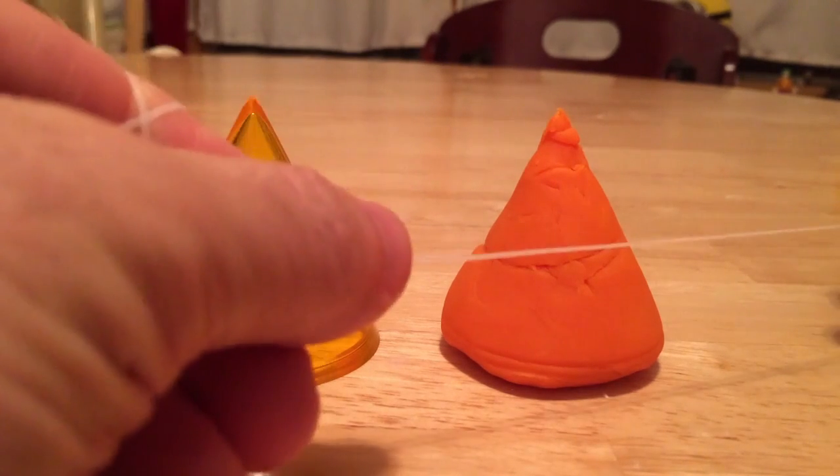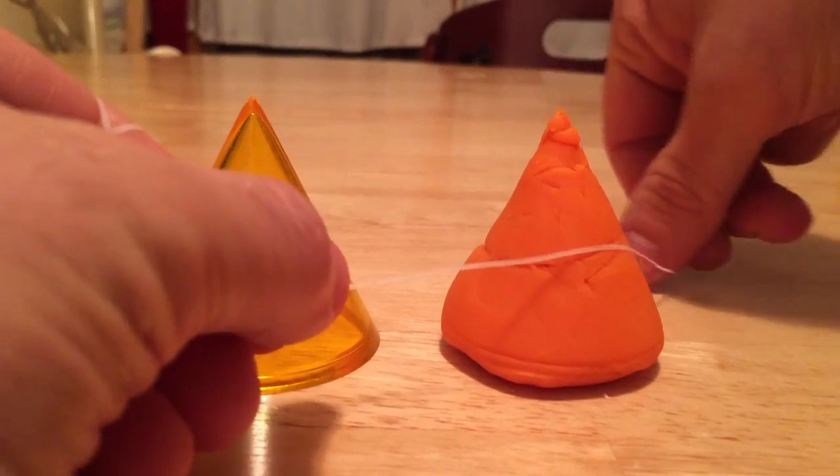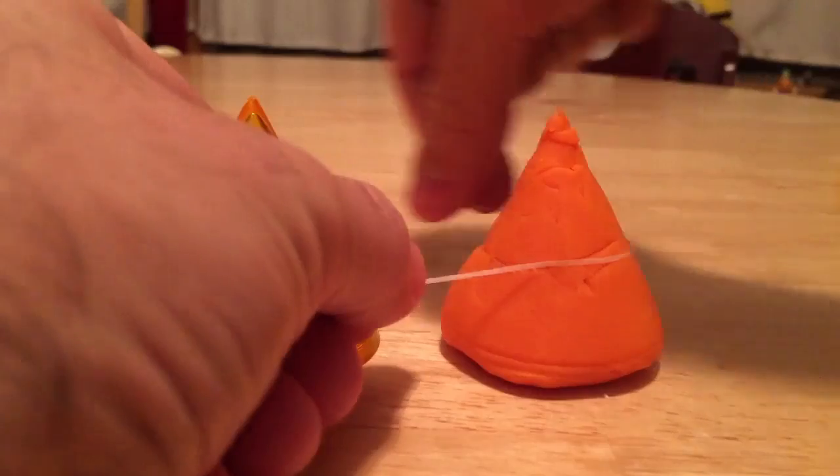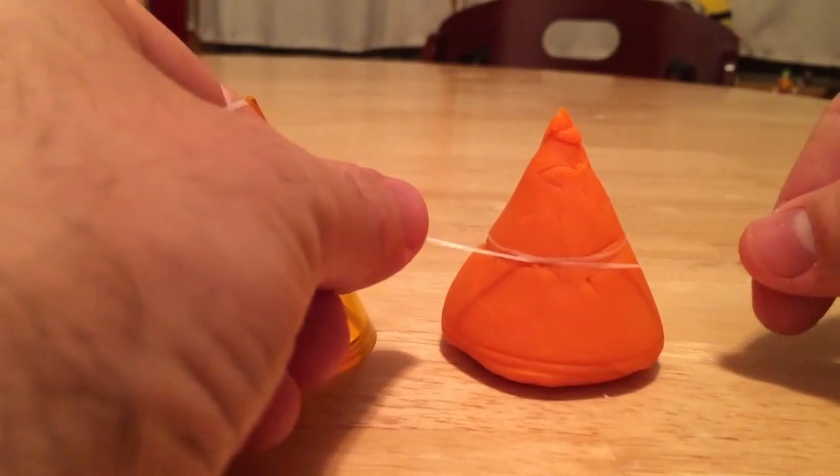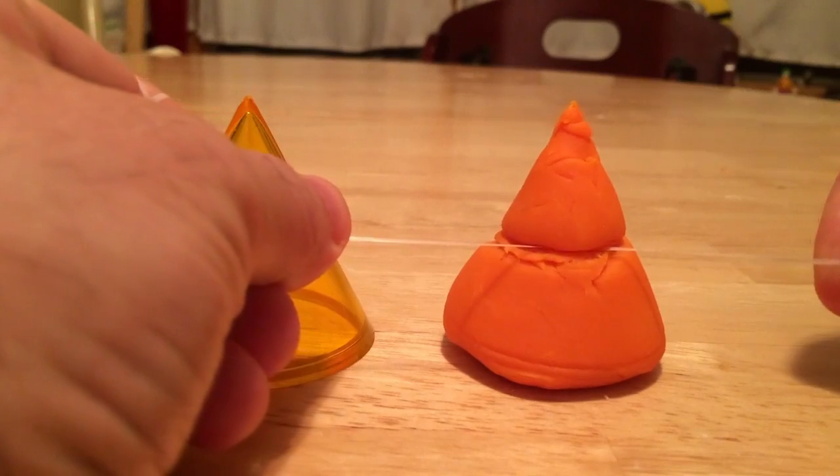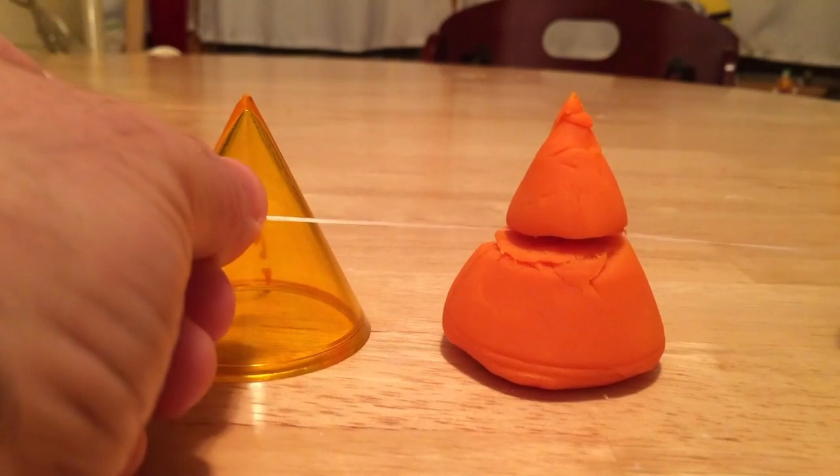So I'm going to take my floss and I'm going to wrap it around the shape, get it all the way around there, just like that, and then I'm going to pull in both directions to make my cut. Nice clean cut.